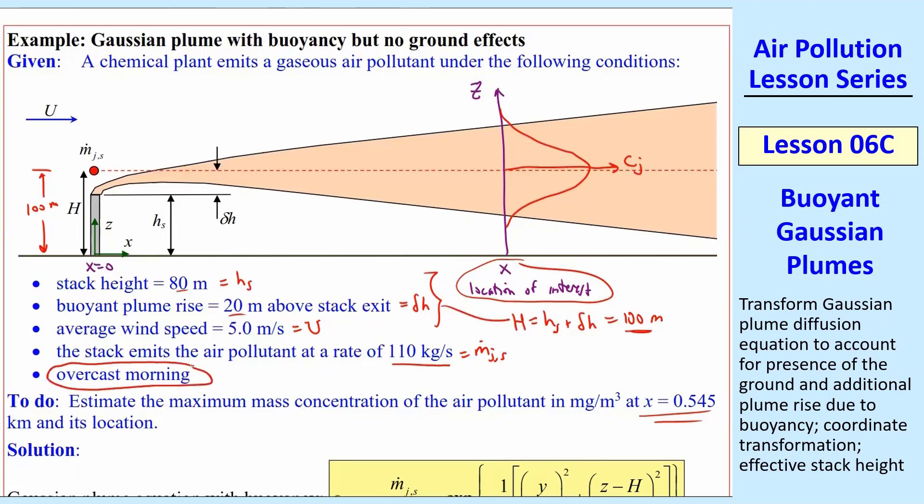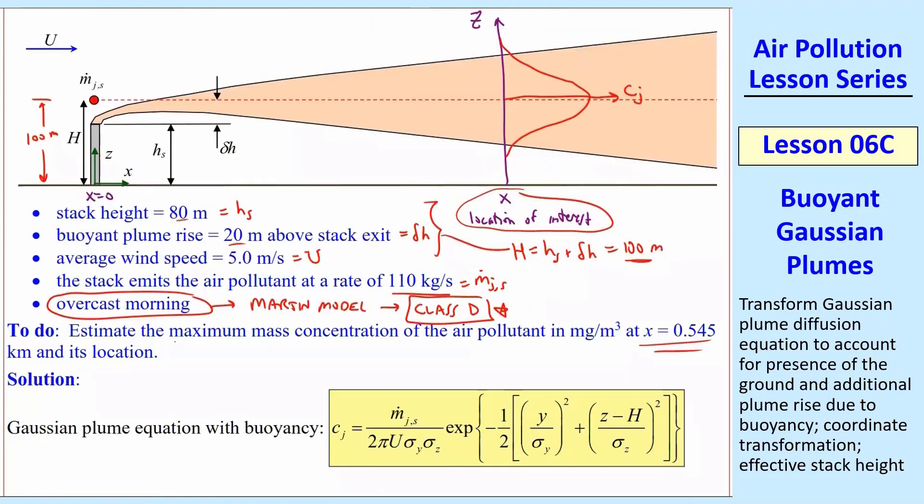It's an overcast morning. So this is a hint to look at the Martin model. We'll always use the Martin model, unless I would tell you differently. And so this is review for you. Look that up. And this is a class D. What we're asking here is the maximum mass concentration of the air pollutant in milligram per meter cubed at this x location of interest. So you have to think about where this max concentration is. I didn't give you a Y and a Z location. So I'm asking you, where is the maximum mass concentration?